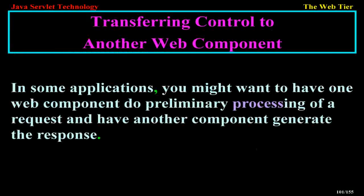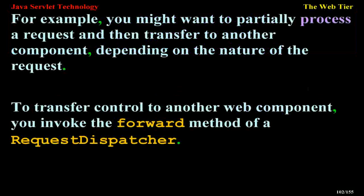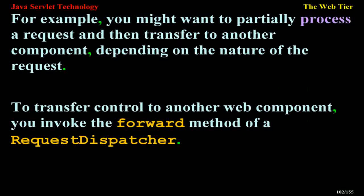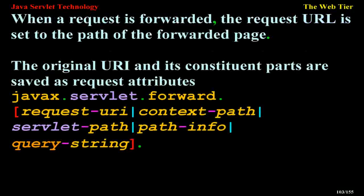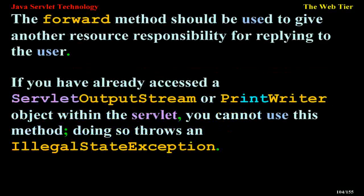Transferring control to another web component: in some applications, you might want to have one web component do preliminary processing of a request and have another component generate the response. To transfer control to another web component, you invoke the forward method of a request dispatcher. When a request is forwarded, the request URL is set to the path of the forwarded page, and the original URL and its constituent parts are saved as request attributes: javax.servlet.forward.request_uri, context_path, servlet_path, path_info, and query_string. The forward method should be used to give another resource responsibility for replying to the user. If you have already accessed a servlet output stream or print writer object within the servlet, you cannot use this method — doing so throws an IllegalStateException.